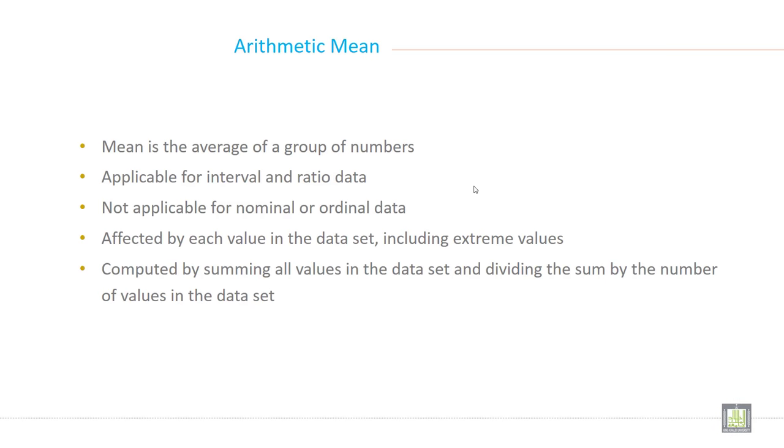Mean is the average of a group of numbers. It is applicable for interval and ratio data, only applicable for interval and ratio data. It means you can calculate mean only for quantitative data, only quantitative not qualitative.